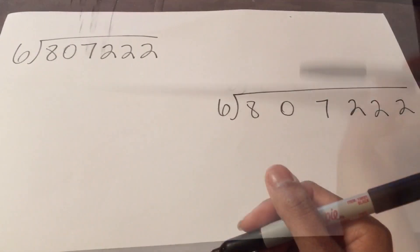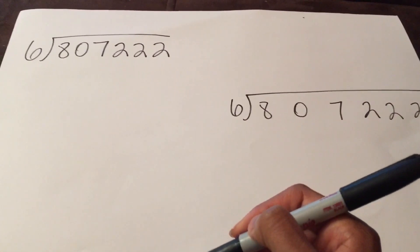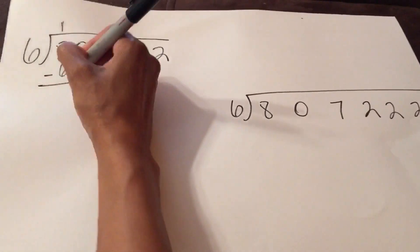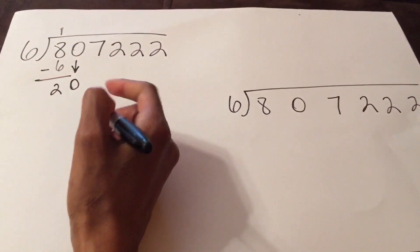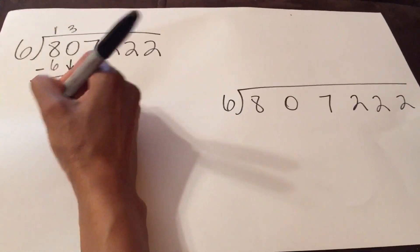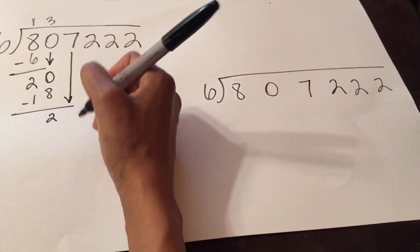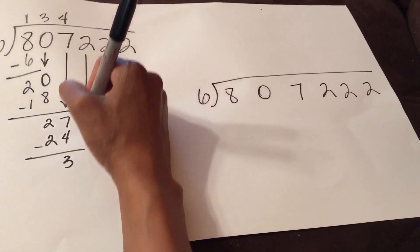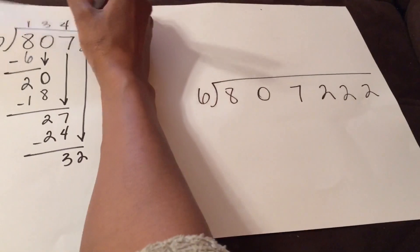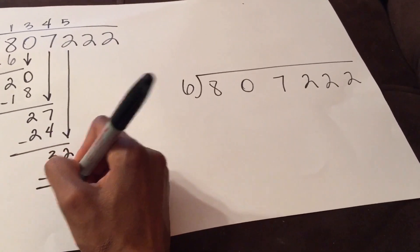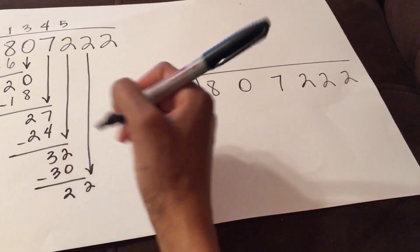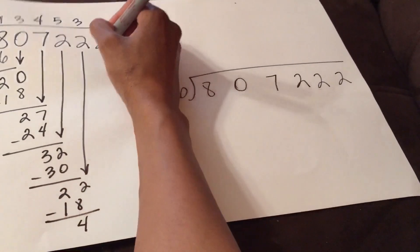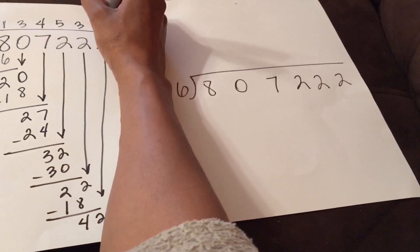I'm going to do one more problem so you understand. Traditional long division on the left: six goes into eight one time, that's six. Subtract and I get two. Bring down this zero — six goes into twenty three times, that's eighteen. Subtract, get two. Bring down my seven — six goes into twenty-seven four times, that's twenty-four. Subtract, get three. Bring down my two — six goes into thirty-two five times, that's thirty. Subtract, get two. Bring down this two — six goes into twenty-two three times, that's eighteen. Subtract, get four. Bring down this two — six goes into forty-two seven times.